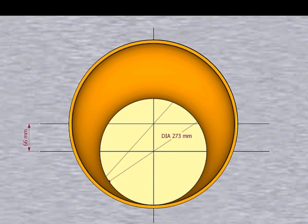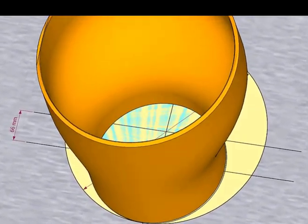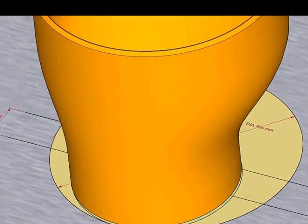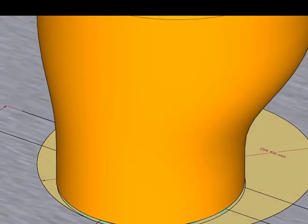Place the reducer on the layout, facing the small end down. Inspect carefully if the reducer sits on the circle correctly.